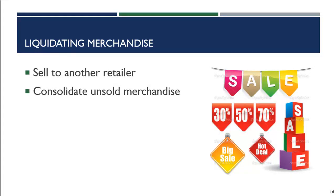You could also consolidate unsold merchandise to one of your own outlet stores. For example, Saks Fifth Avenue owns Off Fifth, and Nordstrom owns Nordstrom Rack. You can consolidate your own merchandise to your own outlet store. This can get expensive due to transportation costs, but it is definitely an available option.